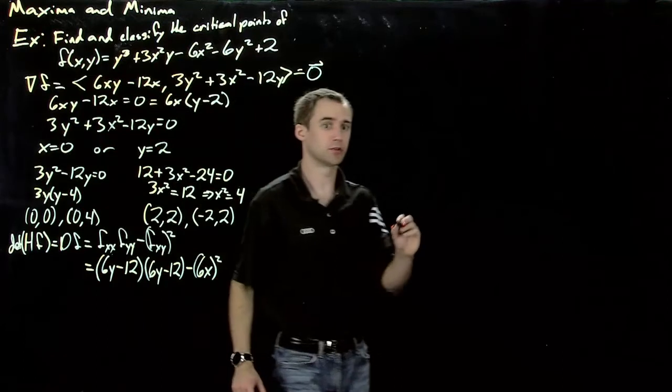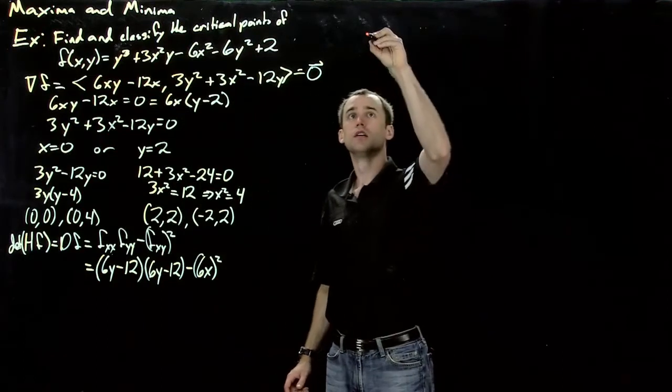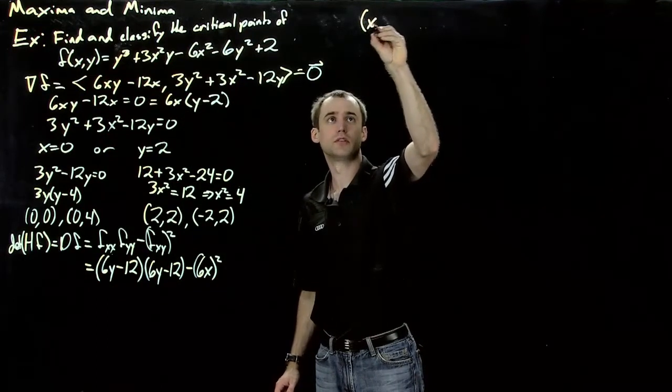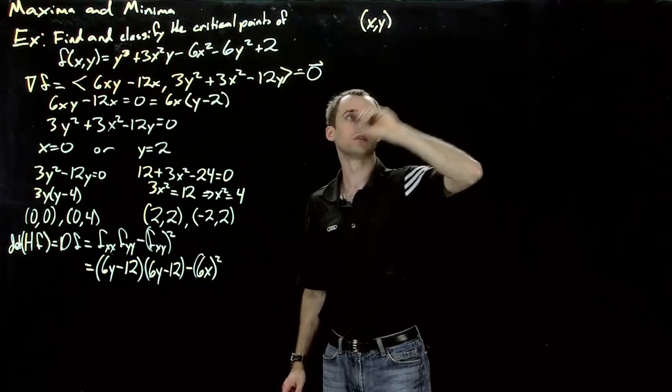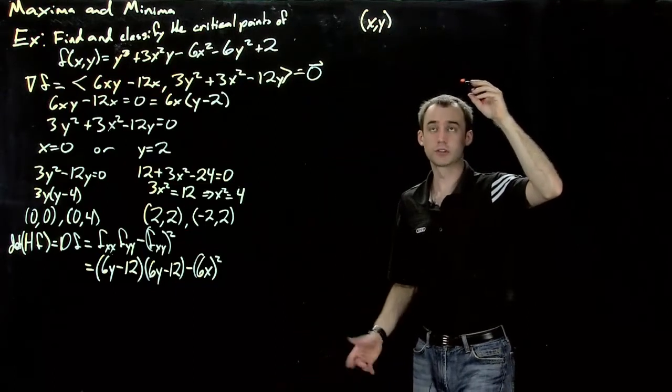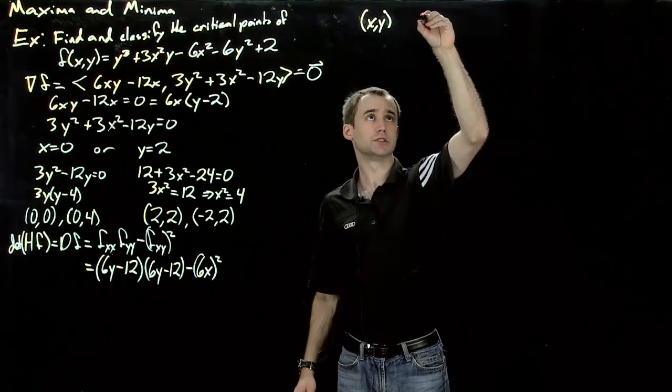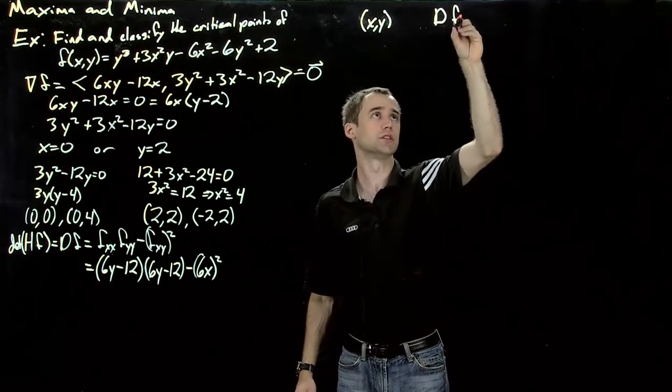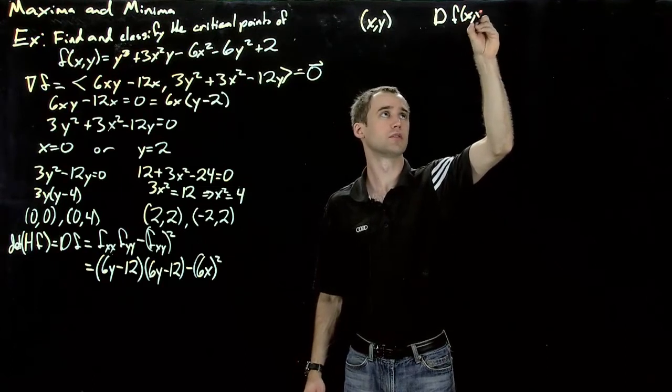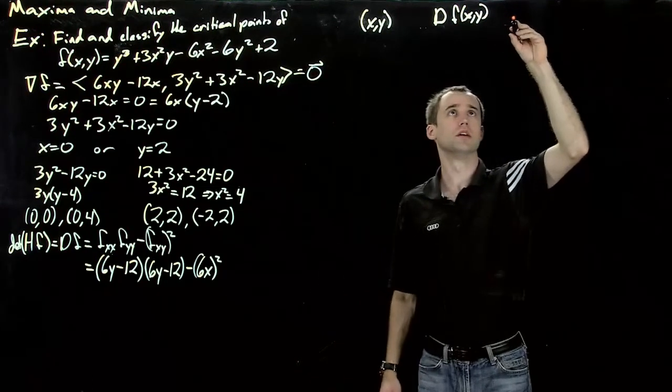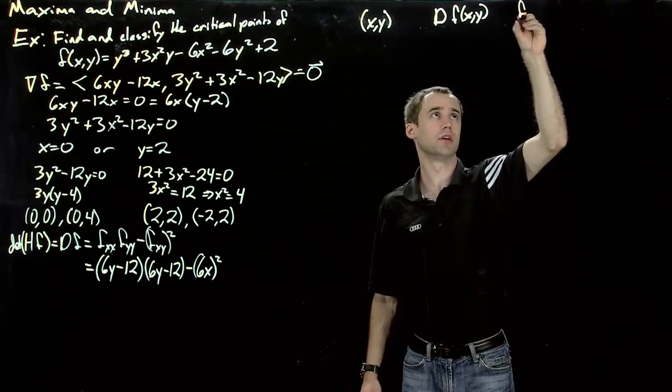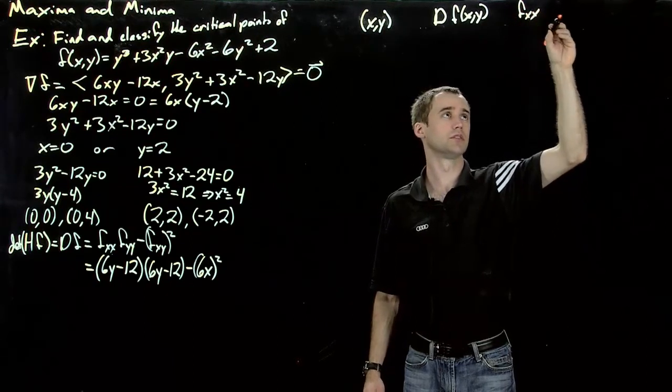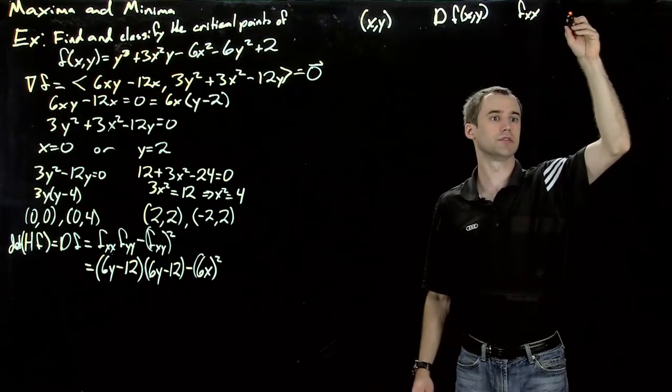Okay. So let's make a table. I'm going to make it over here. So let's call this xy. That's going to be our candidate critical point. And then we'll have the Hessian. The determinant of the Hessian, I should say. And then we'll have fxx. And finally we'll have the type.